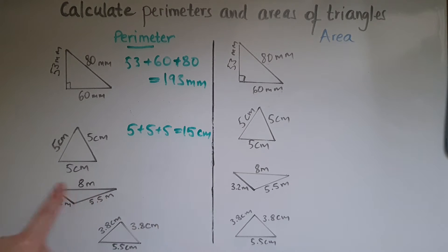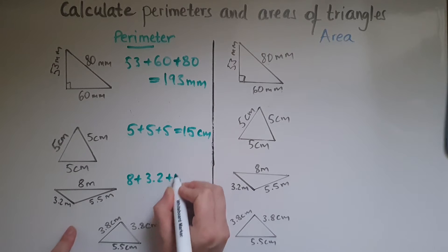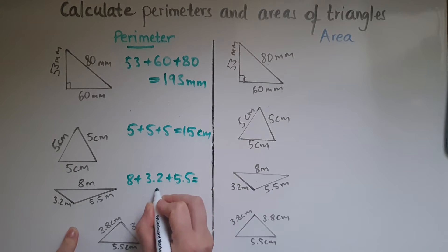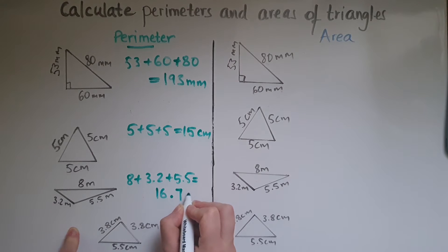So we've got now 8 and 3.2 and 5.5. So that gives us 16.7. The unit is meters.